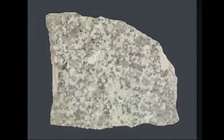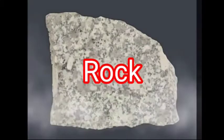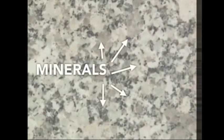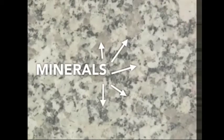Here's a rock — a piece of igneous rock called granite. If you look closely at this chunk of granite, you'll see speckles of gray, white, and black. Zooming in, these are actually mineral crystals. This particular piece of granite contains the minerals quartz, biotite mica, and plagioclase feldspar.